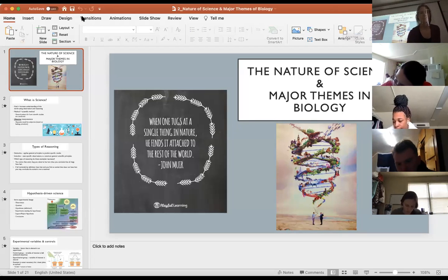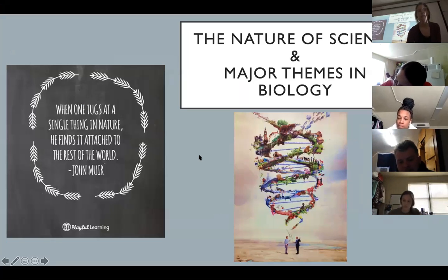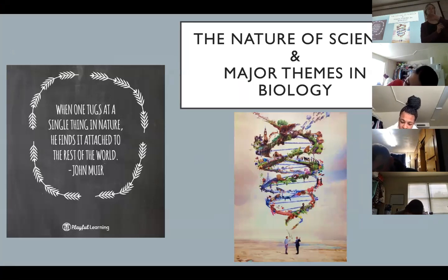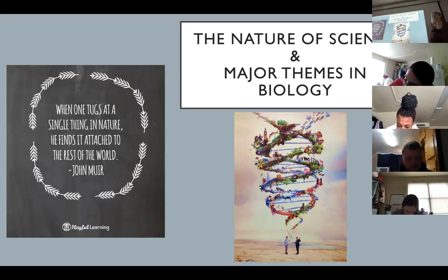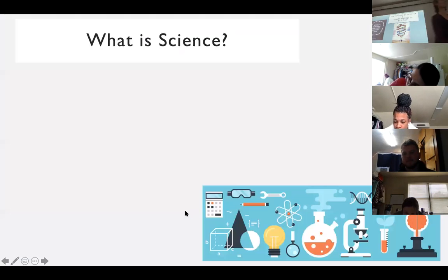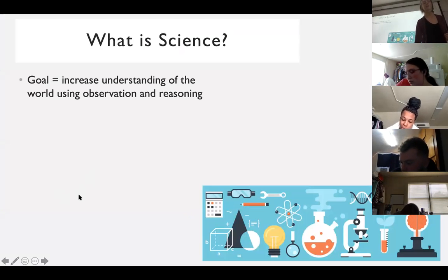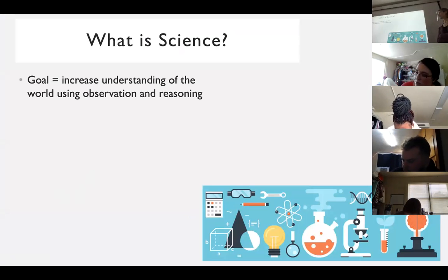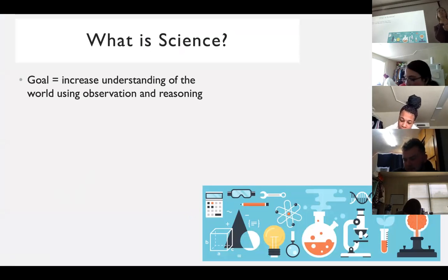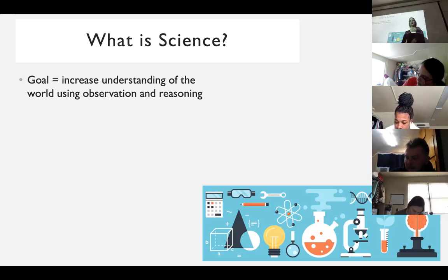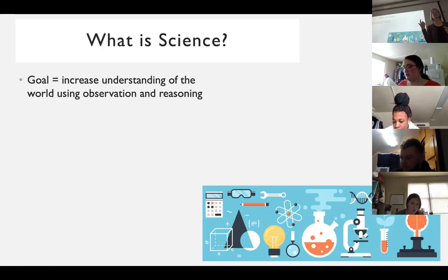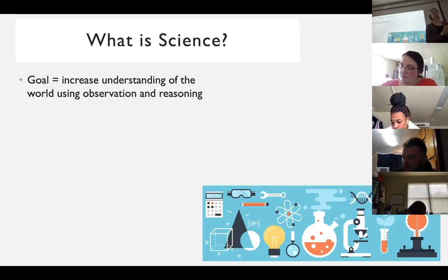We're doing some really big picture stuff here. We're going to get into very small details pretty soon, but this is still big picture information. We're going to talk about the nature of science - what science is, since for a lot of you this may be your first college-level science course - and then some of the major themes you'll see throughout the semester in biology. Science is a really broad category. The goal is to increase the understanding of the world and systems in the world using observation and reasoning. We don't just make up answers - we have to observe something and use our rational mind and experimentation to figure out why.